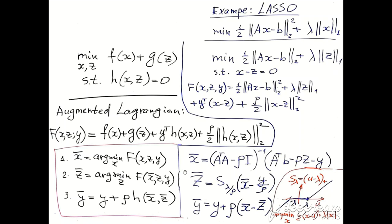So in order to obtain that minimum, we take the thresholding function with parameter lambda divided by rho.